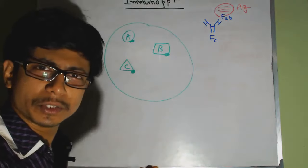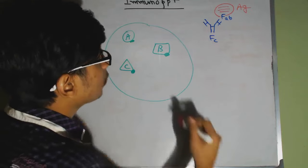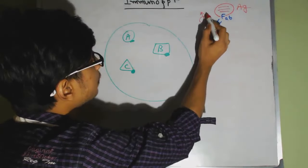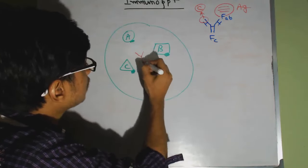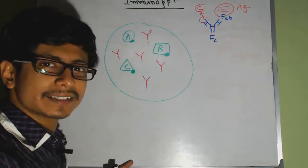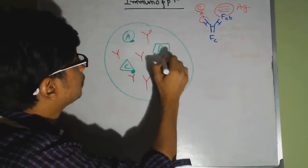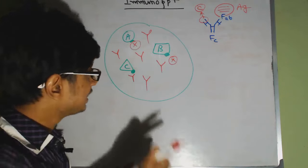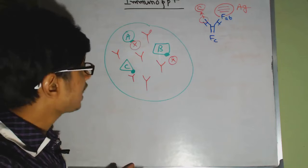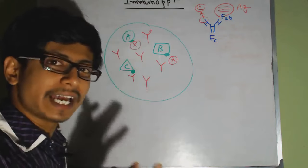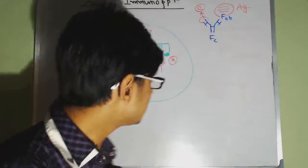We have the mixture in solution, say in an Eppendorf tube, and we add our designed antibody. The FAB portion of that antibody will bind with protein C only due to antigen-antibody specificity. Once we add that antibody — drawn as a Y-shaped structure — it will bind with the C antigen but not with B or A. This antibody will drag protein C down.